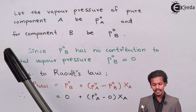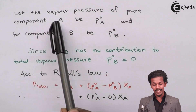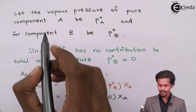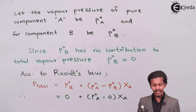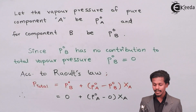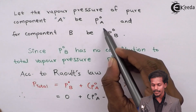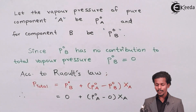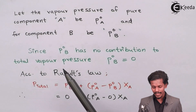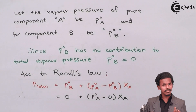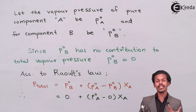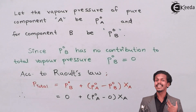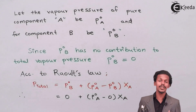Now, let the vapor pressure of pure component A be P0A and for component B, let it be P0B. Since P0B has no contribution to the total vapor pressure, the contribution of P0B — the vapor pressure of the solute, which is a non-volatile solute — will be zero.